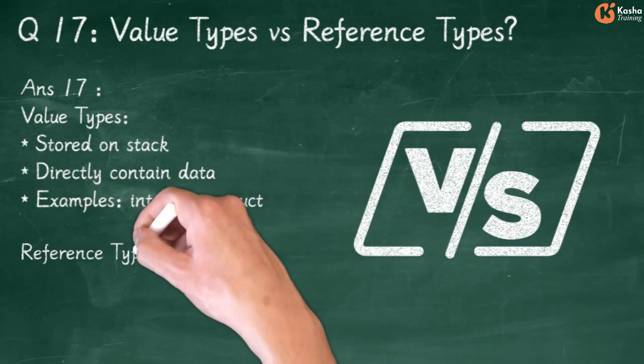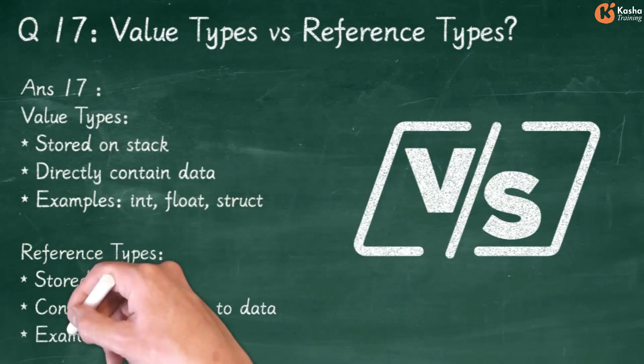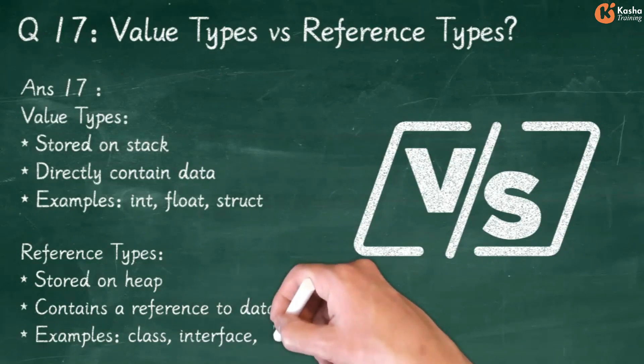Reference Types are Stored on Heap and Contain a reference to data. Examples include Class, Interface, and Delegate.